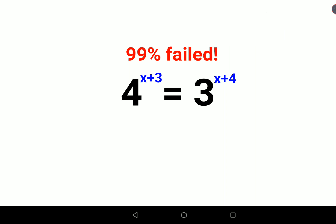According to the law of indices, a raised to m plus n can be written as a raised to m times a raised to n. So using that logic I can write this as 4 raised to x times 4 raised to 3 equals 3 raised to x times 3 raised to 4.